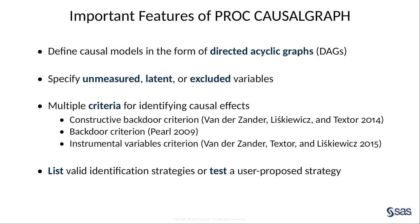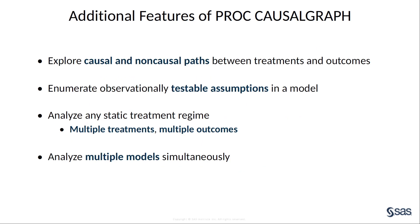In this presentation, you have seen several of the important features of PROC CAUSALGRAPH, including those listed on this slide. In addition to these features, PROC CAUSALGRAPH includes the capability to enumerate paths in a causal model or to enumerate the statistically testable assumptions of a causal model. PROC CAUSALGRAPH can also accommodate multiple treatment variables, multiple outcome variables, and even multiple causal models simultaneously.